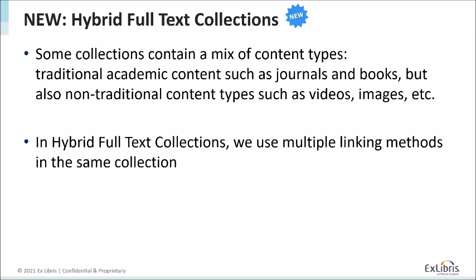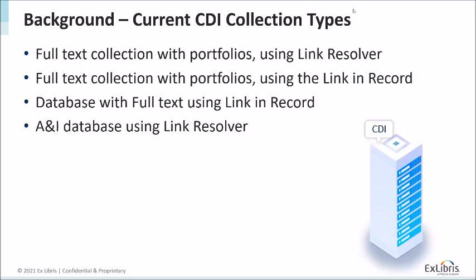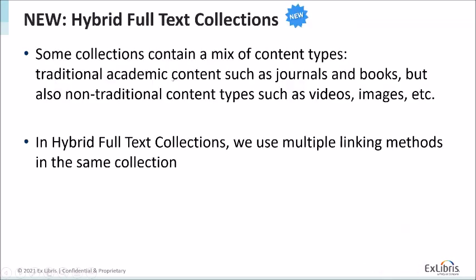Until now, we treated most mixed collections as the first type — full-text collection with portfolios using link resolver. This is currently how ProQuest Central and Gale One File work. With hybrid full-text collections, we will be able to use multiple linking methods within the same collection. Part of the content will work with link resolver and part will work with linking record.